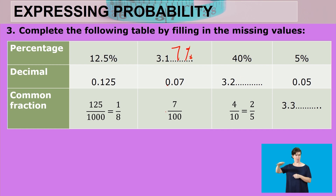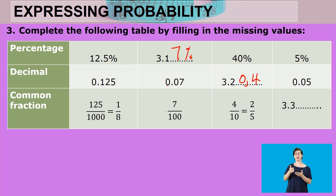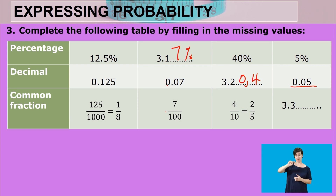To find the decimal for 2 over 5: divide 2 by 5, which gives 0.4. Even simply, 40% on the decimal point is 0.4. For the final row, we are given 5% and 0.05 as the decimal — to write it as a common fraction, enter 0.05 on the calculator and press equals, which gives 1 over 20. That is how we express probability in its three forms.